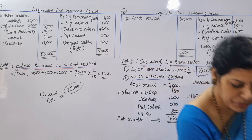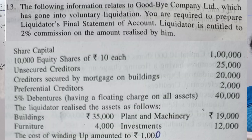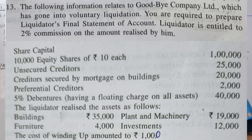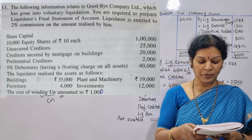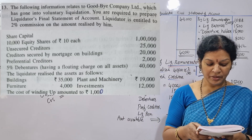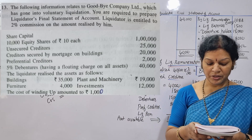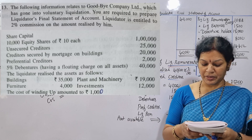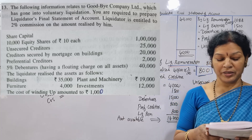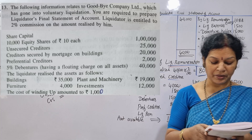The first problem — this is Problem 13. The following information relates to Goodbye Company Limited, which has gone into voluntary liquidation. You are required to prepare the liquidators' final statement of account.